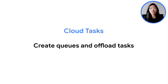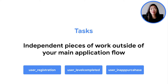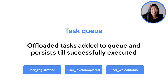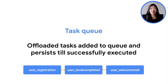How we can do this is with services such as Cloud Tasks, where you can easily create new queues and offload any asynchronous tasks, giving you a distributed task queue that you can integrate with any of your applications. Tasks are pieces of work that you can perform independently outside of your main application workflow, and these uploaded tasks are added to a queue until it's successfully executed. This could be as simple as executing tasks asynchronously for new user registrations, having the user complete a certain task, and then finally sending a welcome email.